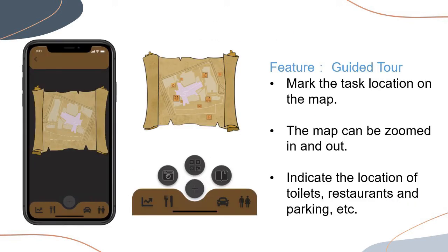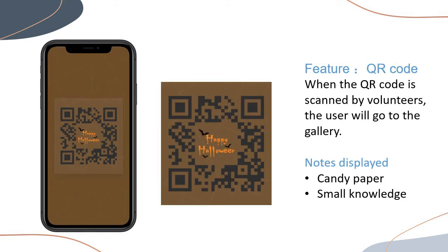At the center of the guided tour function is the map. Users can easily find task locations, car parks, toilets, and restaurants, among other facilities. The map is fully interactive and can be zoomed in, zoomed out, and dragged around. With regard to the QR code, this function is mainly used by users performing tasks to confirm and indicate the completion of tasks. When the QR code is scanned by volunteers, the user will proceed to the gallery, and will be welcomed with a candy ring and a Halloween fun fact.